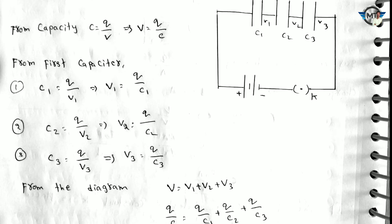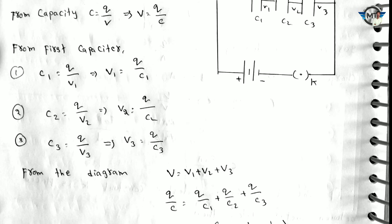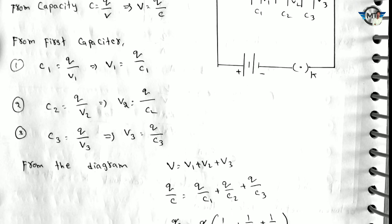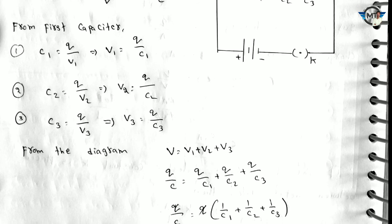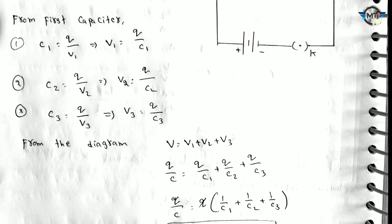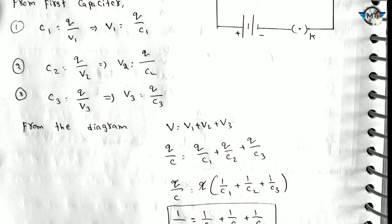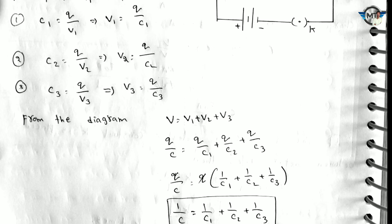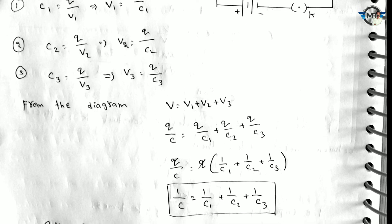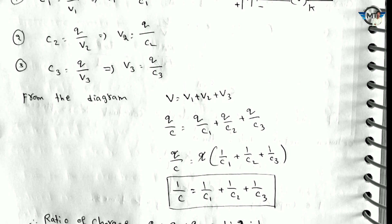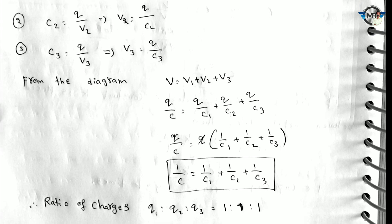Capacitance C equals Q by V, so V equals Q by C. From the first capacitor, V1 equals Q by C1; V2 equals Q by C2; V3 equals Q by C3. The total potential difference is V equals V1 plus V2 plus V3, which equals Q by C1 plus Q by C2 plus Q by C3. Dividing both sides by Q gives 1 by C equals 1 by C1 plus 1 by C2 plus 1 by C3.